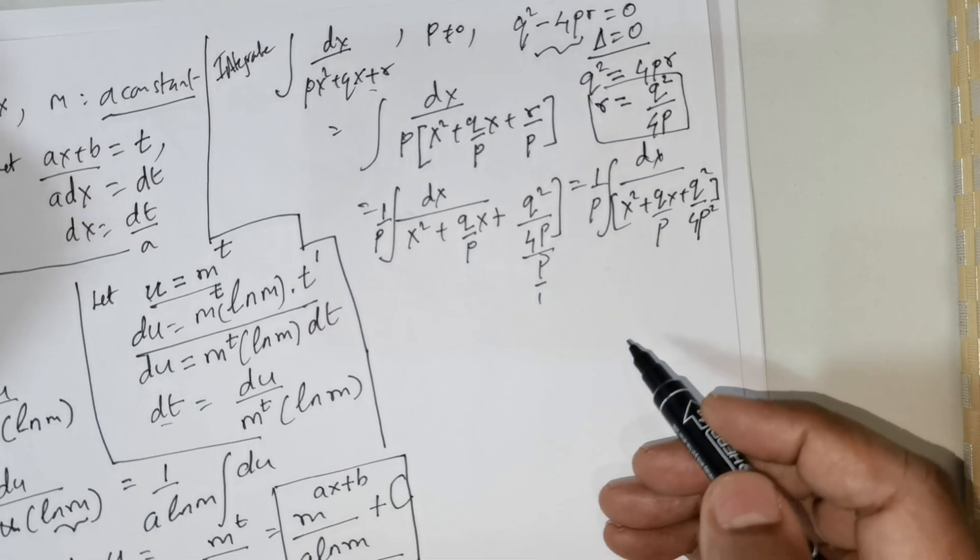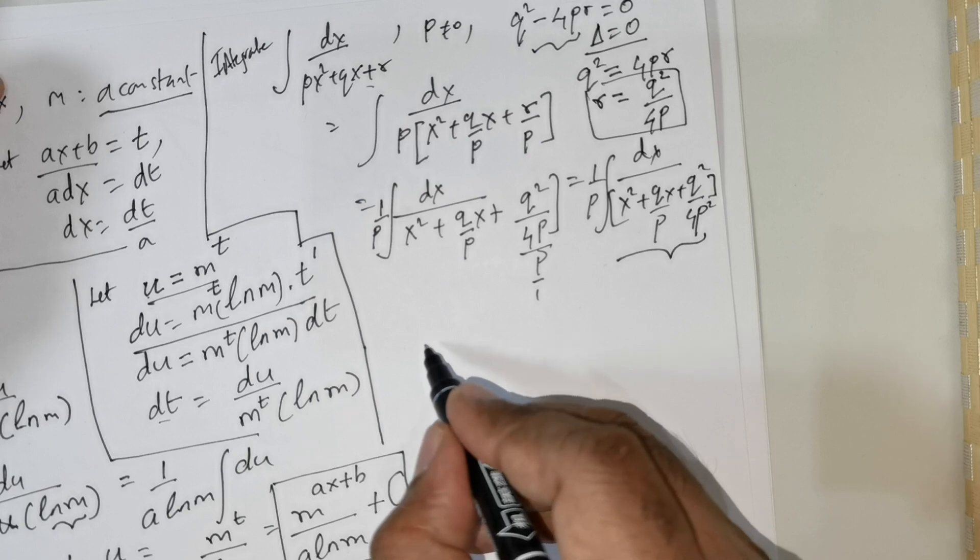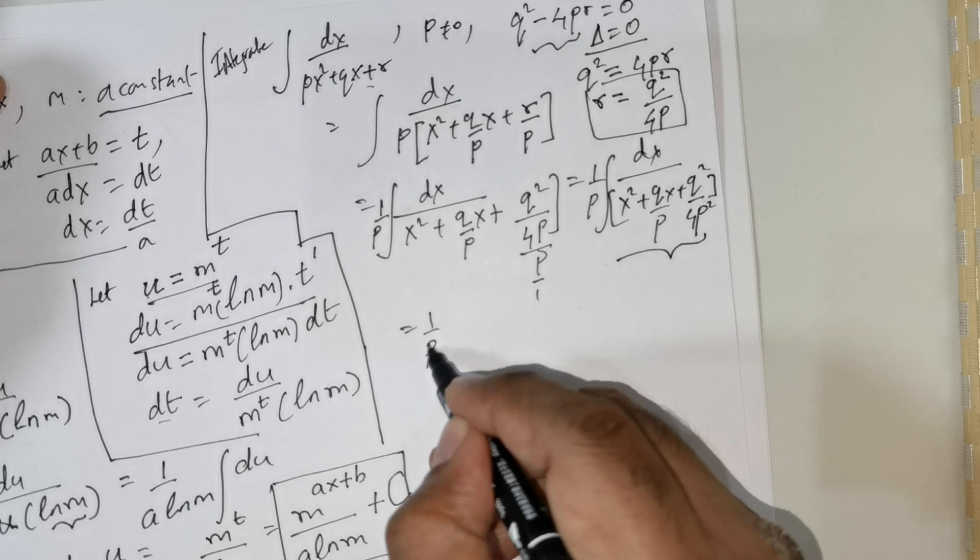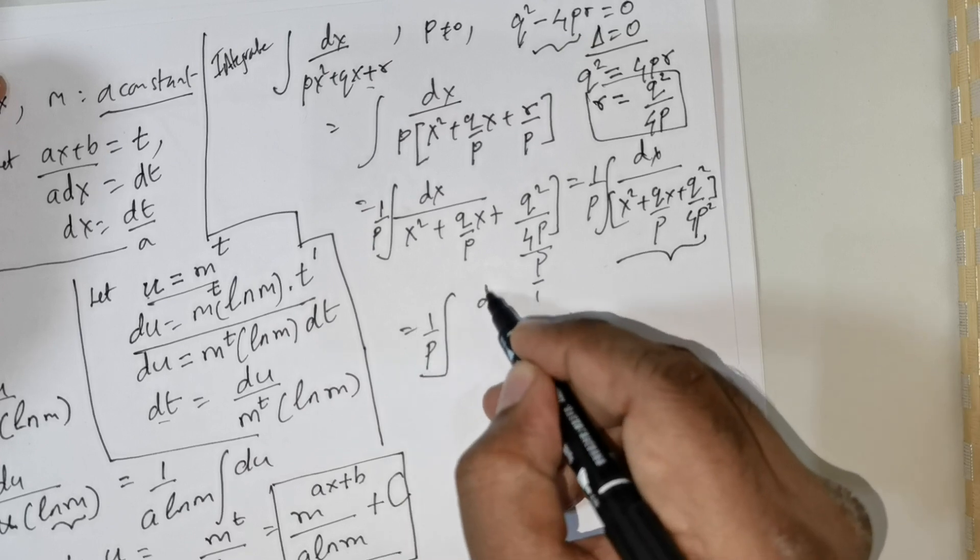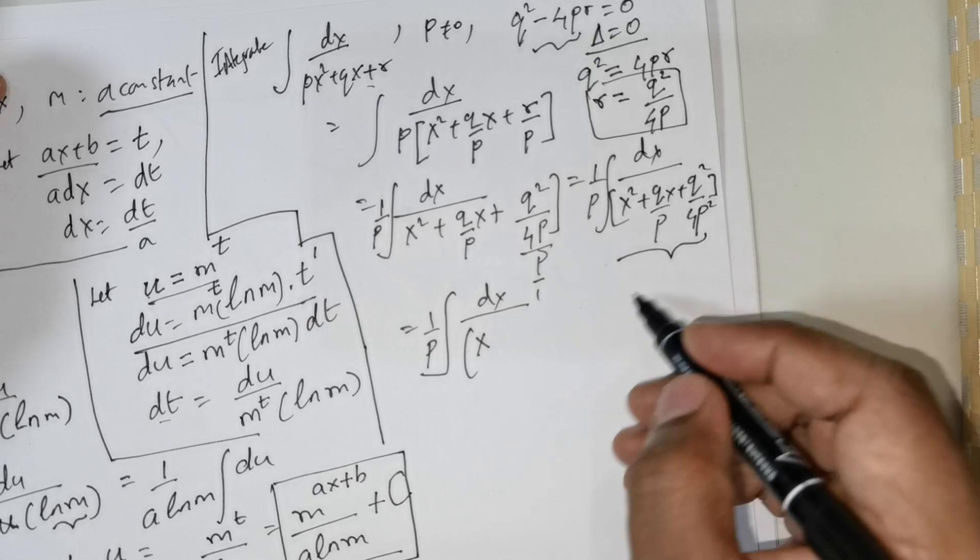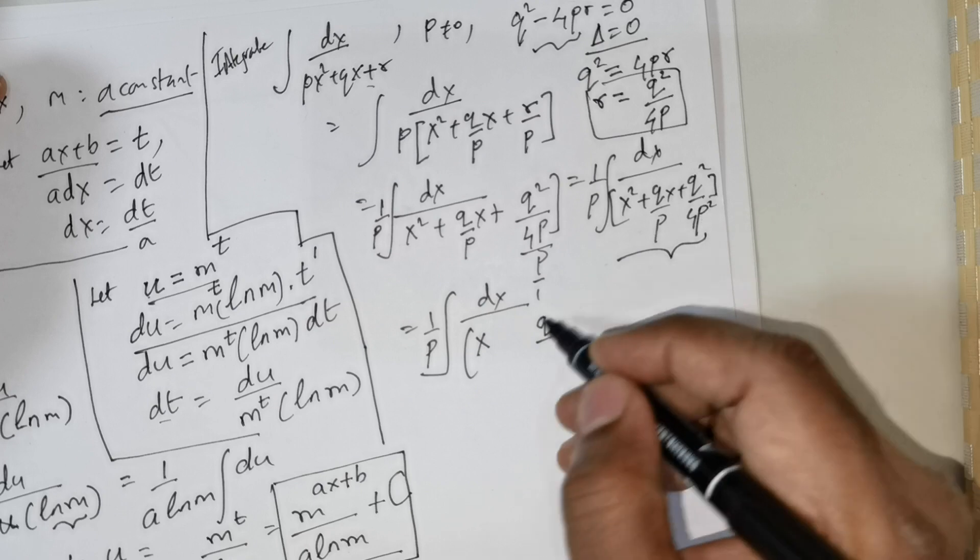Now what I would like to do is express this as a perfect square. How can I do that? I can do that in this following fashion: this is 1 over p integral dx over, the first term is x.